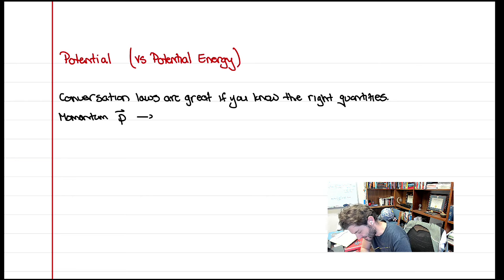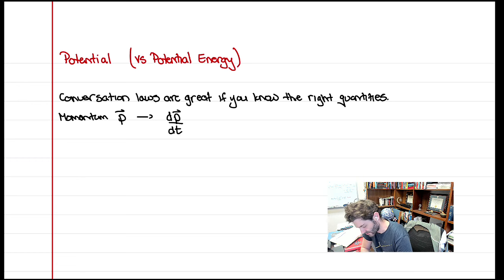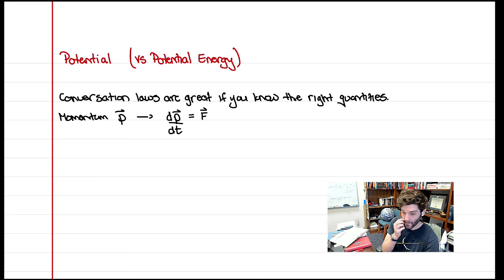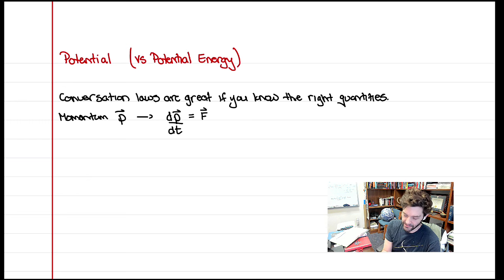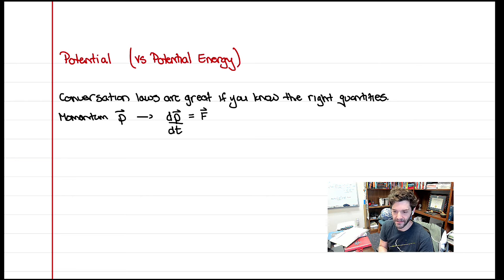Newton essentially wrote that the momentum of an object changes with time — that's dp/dt — and called that a force. Forces cause the momentum of the object to change. When mass is a constant, the derivative on the left is just mass times the derivative of velocity, which is acceleration.